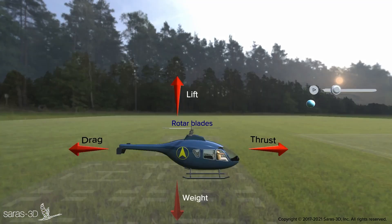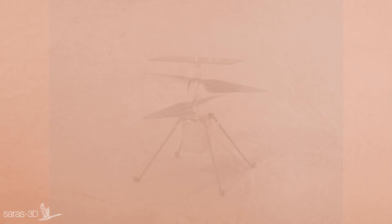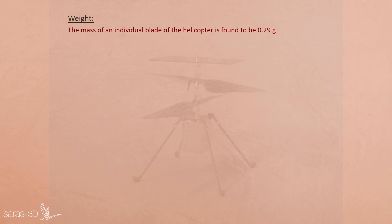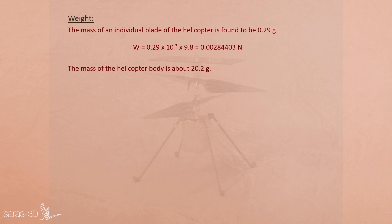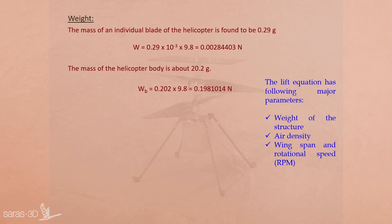At the center of gravity of the blades, a force acts in the downward direction — the weight due to the mass of the blades. The mass of an individual blade of the helicopter is found to be 0.29 grams, so the weight W equals M times G, where G equals 9.8 m/s² — the gravitational acceleration on Earth. The mass of the helicopter body is about 20.2 grams. The lift equation has the following major parameters: weight of the structure, air density, wingspan, and rotational speed.